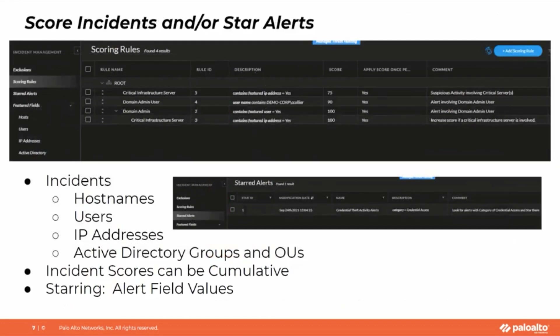Scoring incidents and/or starring alert incidents is done under the investigation management. Scoring rules can be based on host names, users, IP addresses, or Active Directory group or organizational units. So you want to do that directory sync setup with Active Directory to pull this information in, and it can be used in incident scoring.